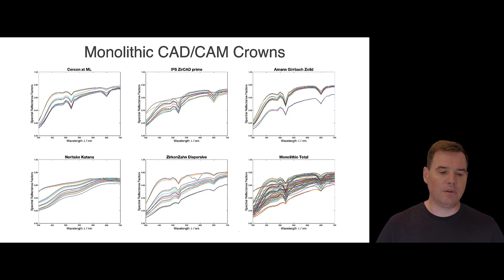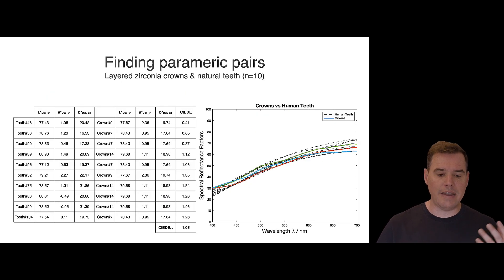If you want to evaluate metamerism, you really have to find pairs of a natural tooth and extracted maxillary central and a maxillary central crown that present with a small color match. And these are called metameric pairs. So we used the MATLAB routine to identify metameric pairs of crowns and natural teeth that matched reasonably well. And from the initial 114 extracted human teeth that we had, the 30 layered crowns and 75 CAD-CAM milled monolithic crowns, the routine identified 10 pairs of extracted human teeth and hand layered restorations that presented with a pretty small color difference. On average, it was 1.5.